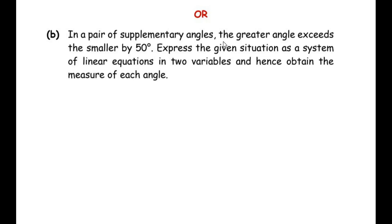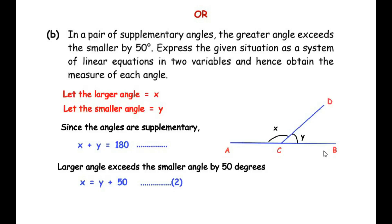In a pair of supplementary angles, the greater angle exceeds the smaller by 50 degrees. We need to express this as a system of linear equations in two variables and find the measure of each angle. Drawing a figure, ACB represents a straight line and CD divides it into two angles. Supplementary angles add up to 180 degrees. Let the larger angle be x and the smaller angle be y.